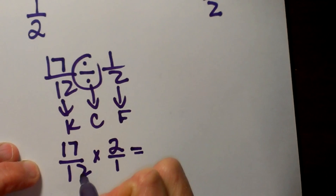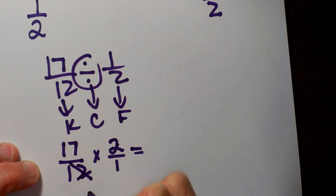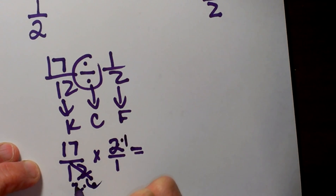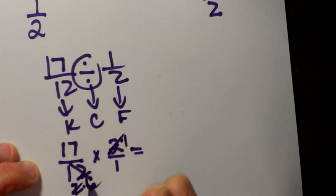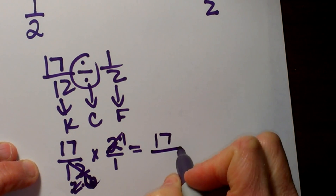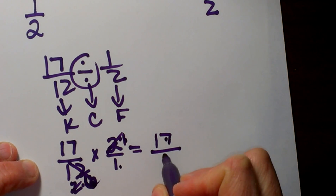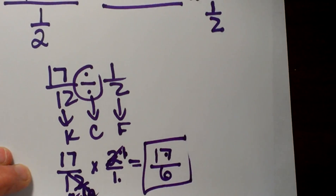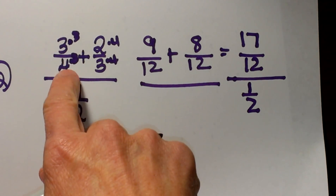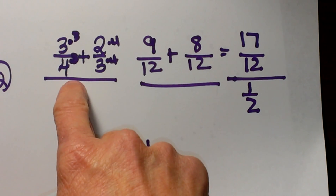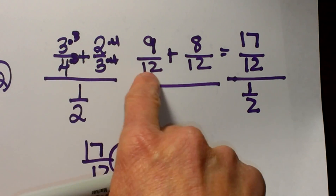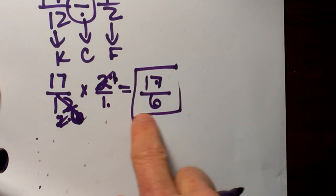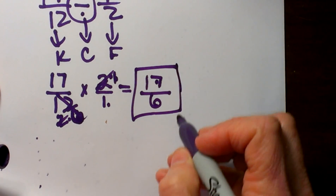When you multiply across you can actually reduce it. I see that 12 and 2 both have a factor of 2, so 12 is 2 times 6 and the numerator 2 is just 2 times 1 — I factor out the twos and am left with 6 in the denominator. So I have 17 times 1 which is 17, over 6 times 1 which is 6. My final answer is 17 over 6. We went from 3 fourths plus 2 thirds all over one half all the way down, and that simplifies to 17 over 6.